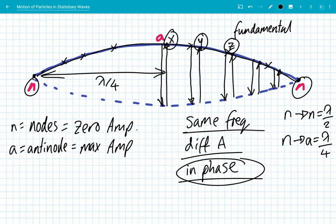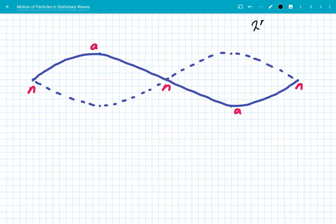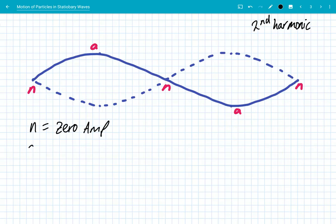Now let's look at the second harmonic — a slightly different stationary wave pattern. We've added in an extra node and an extra antinode. Once again, nodes are positions of zero amplitude and antinodes are positions of maximum amplitude. The particles at the node positions are fixed, whereas at the antinodes the particles are oscillating with maximum amplitude.